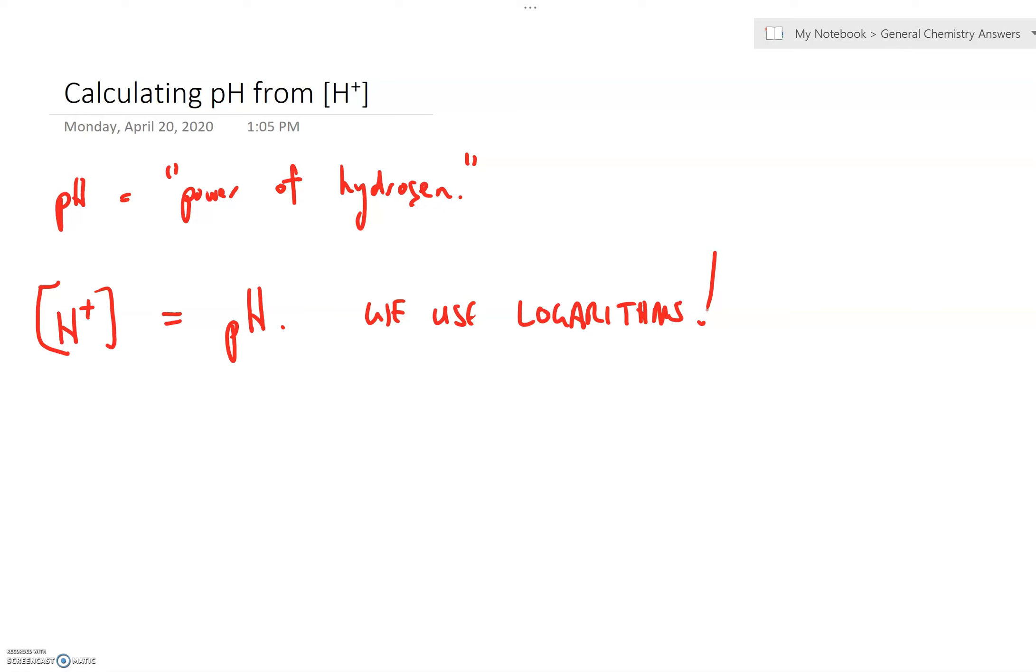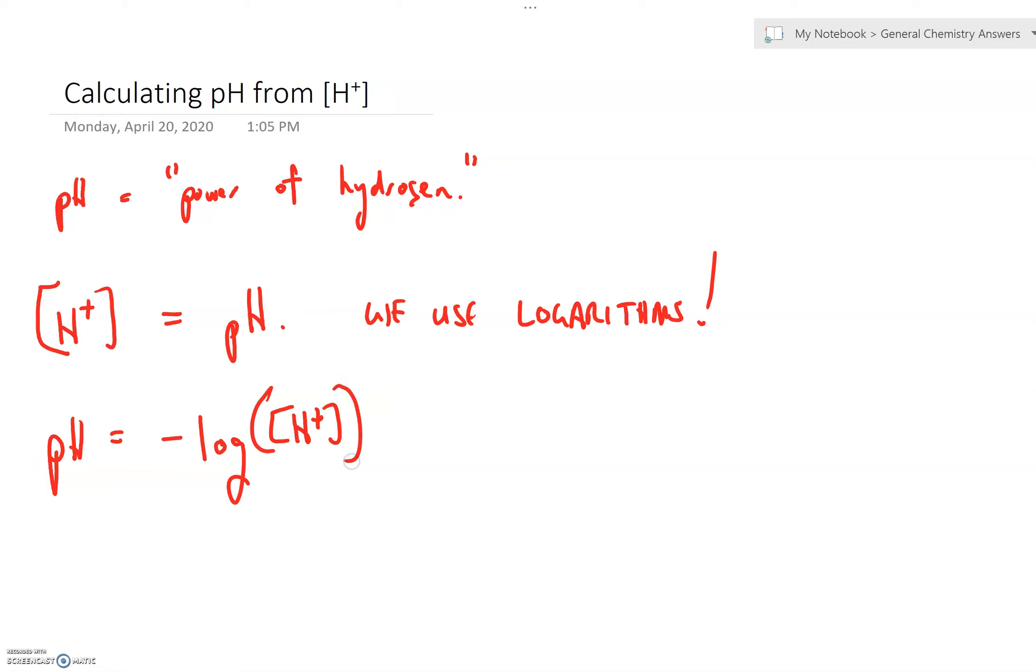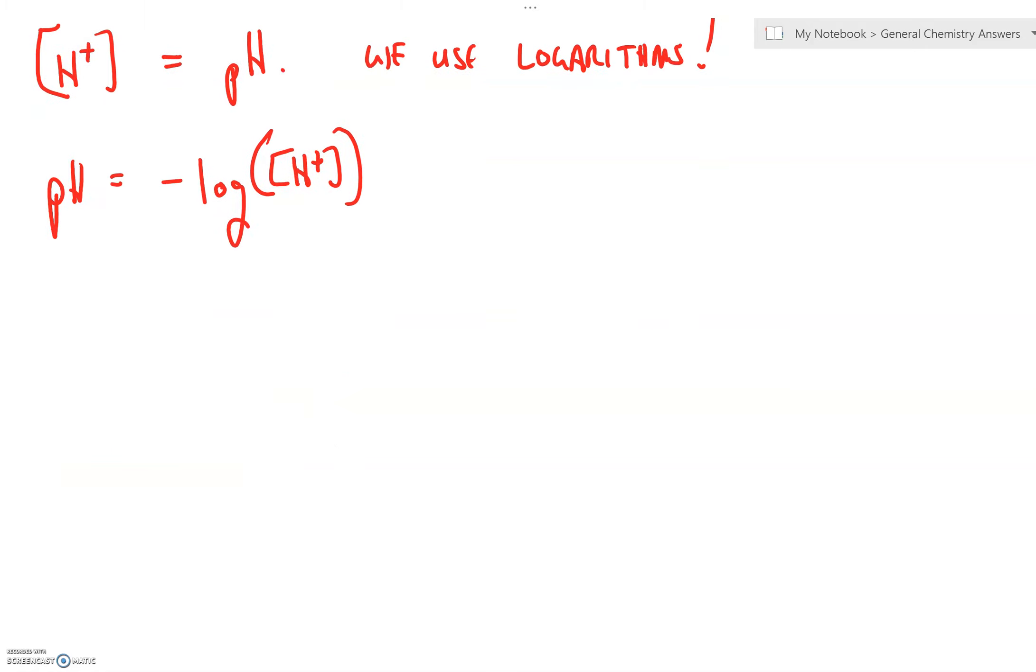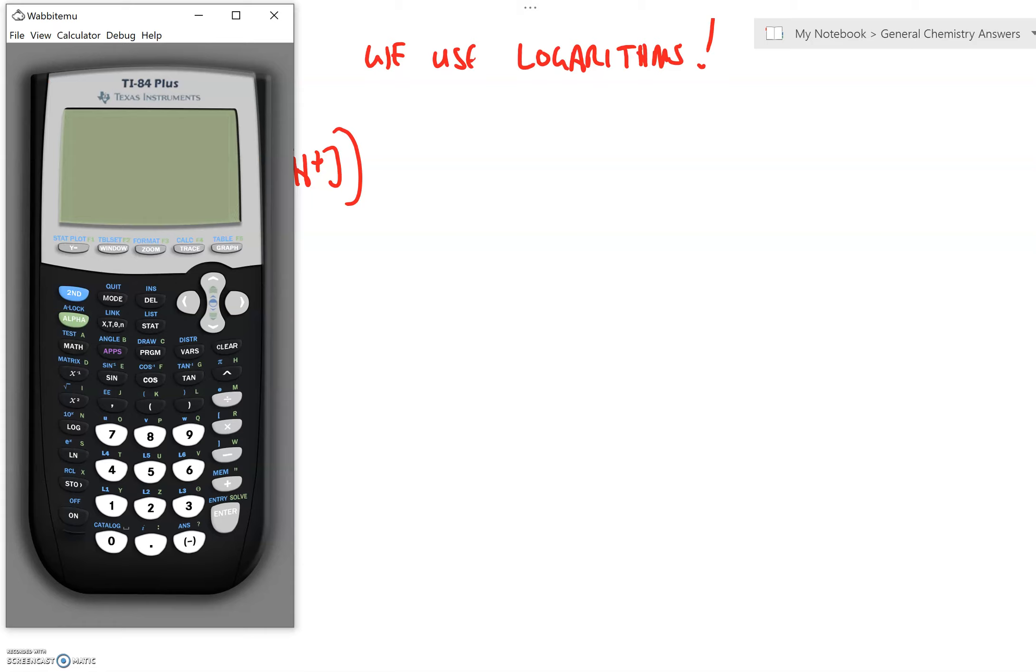Here's how we do it. We're going to use this real simple equation. pH is equal to negative log of H+. So, all you need is the H+ from your acid solution and the log button, which you can find right here on your calculator, right here next to the number 7.